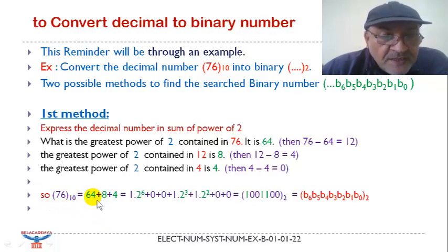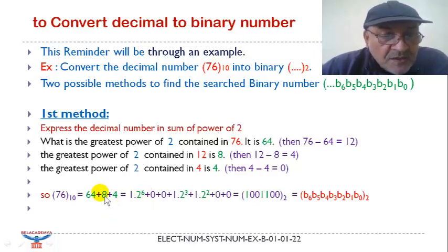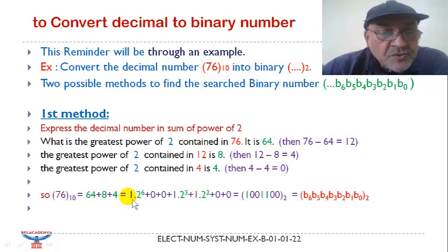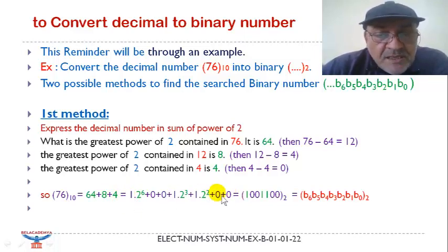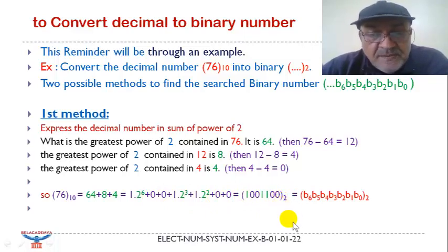So 76 can be written as the sum 64 + 8 + 4. Now, 64 is 1 × 2^6; there are no powers 5 and 4, so their coefficients are 0. Then 8 is 1 × 2^3, and 4 is 1 × 2^2. The remaining terms do not exist and are represented by 0. We simply transpose the coefficients: 1 0 0 1 1 0 0. This is the result of the first method.